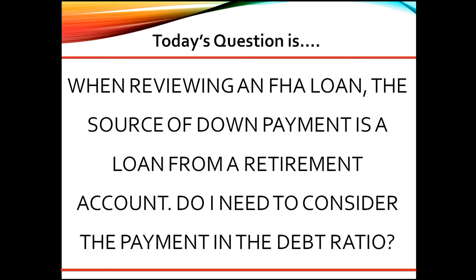Great question. As an FHA DE underwriter, here are my thoughts. FHA does not require a retirement account loan payment to be used in the qualifying ratios. You must reduce the amount of borrowed funds from the total assets in the retirement account before including any remaining balance as reserves.